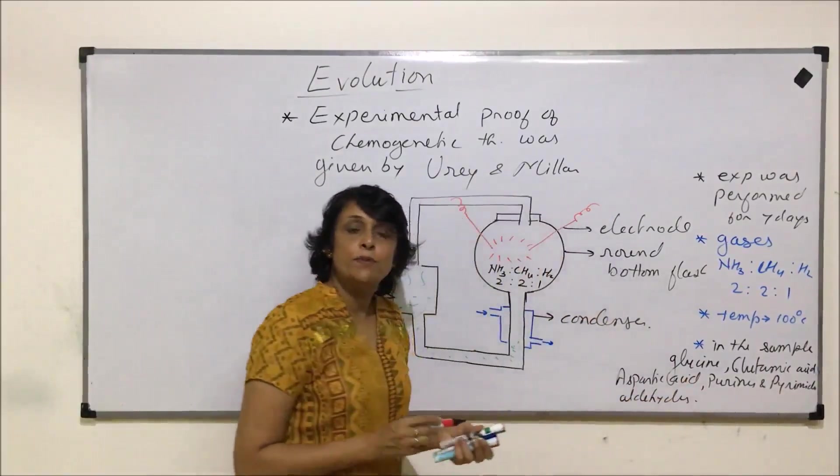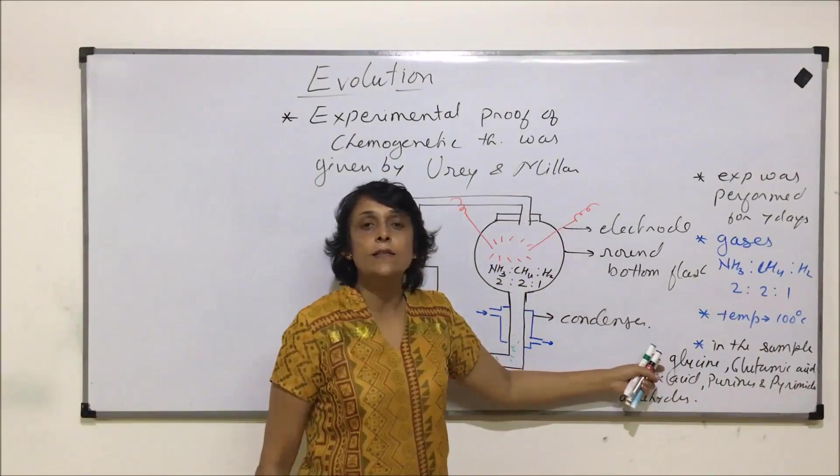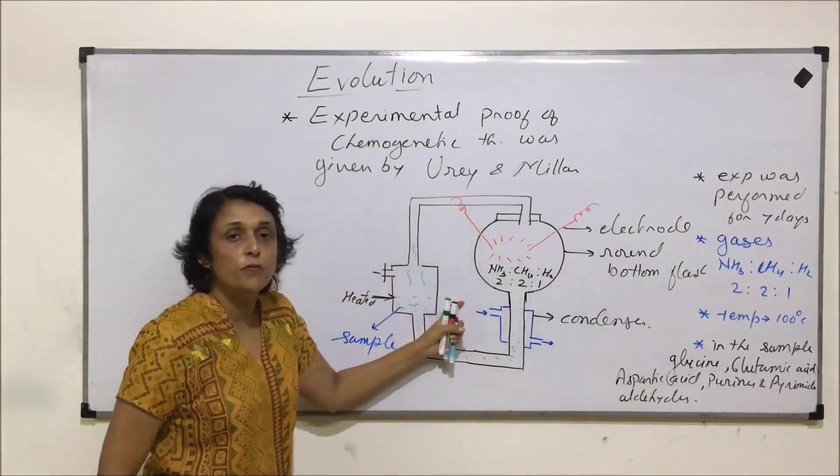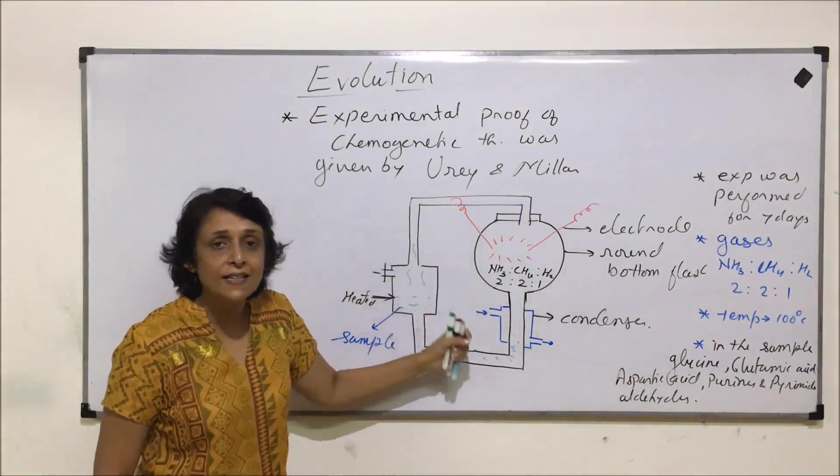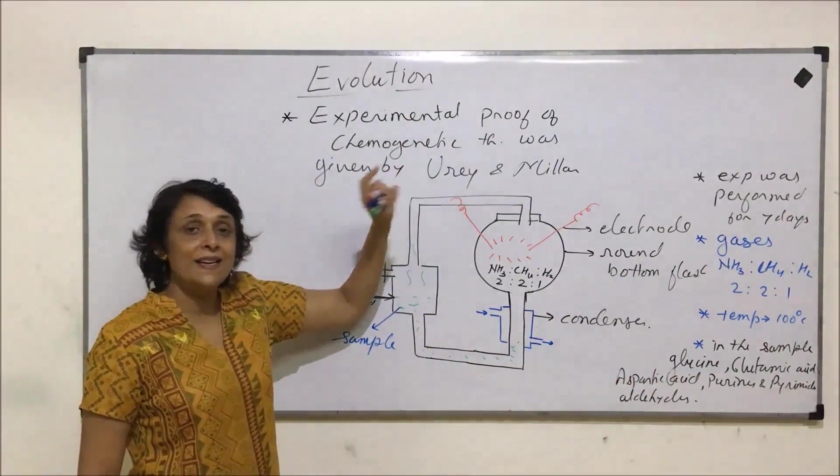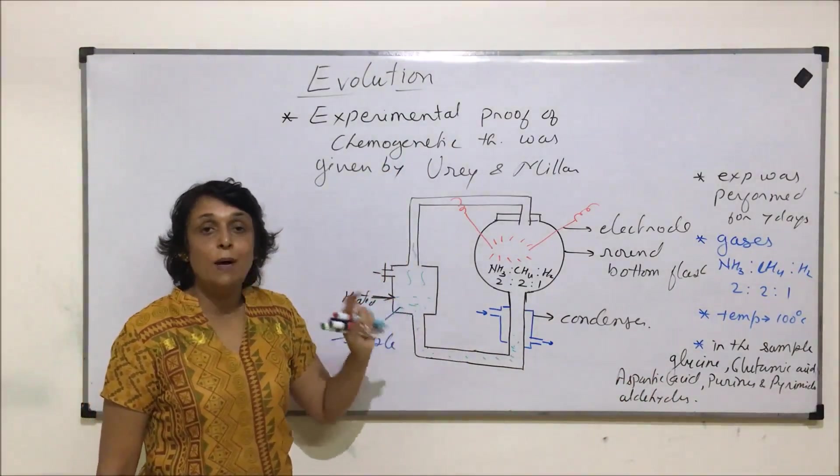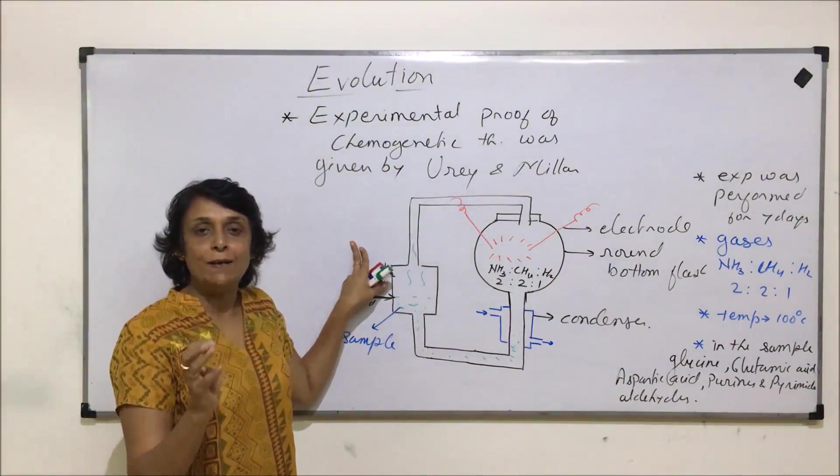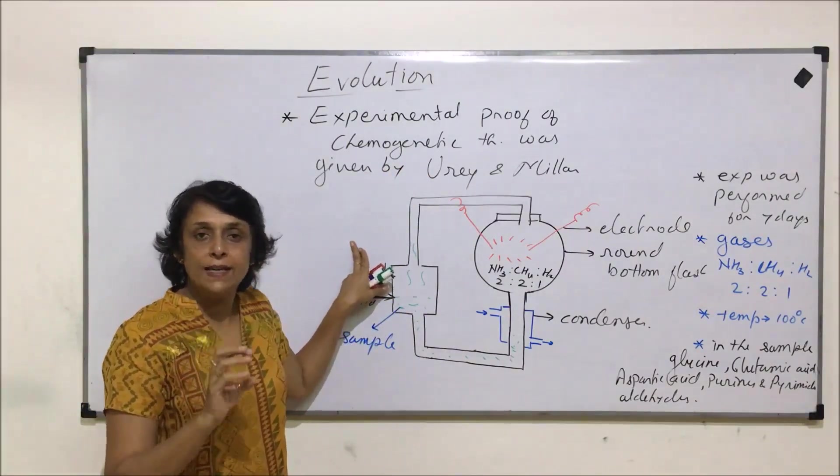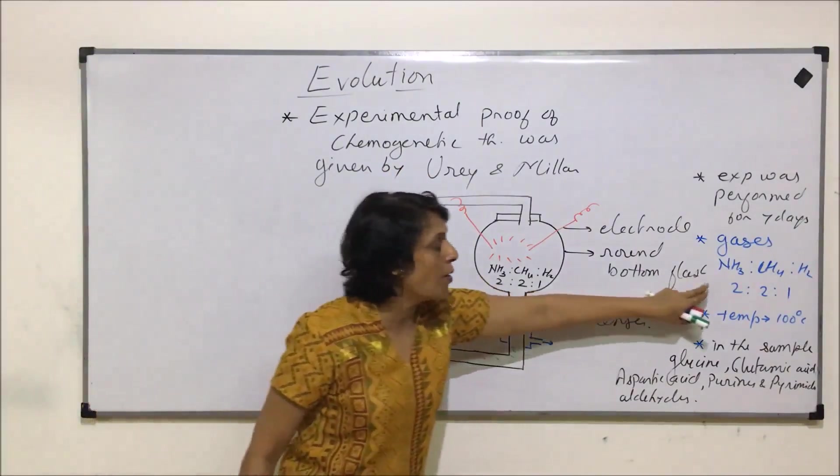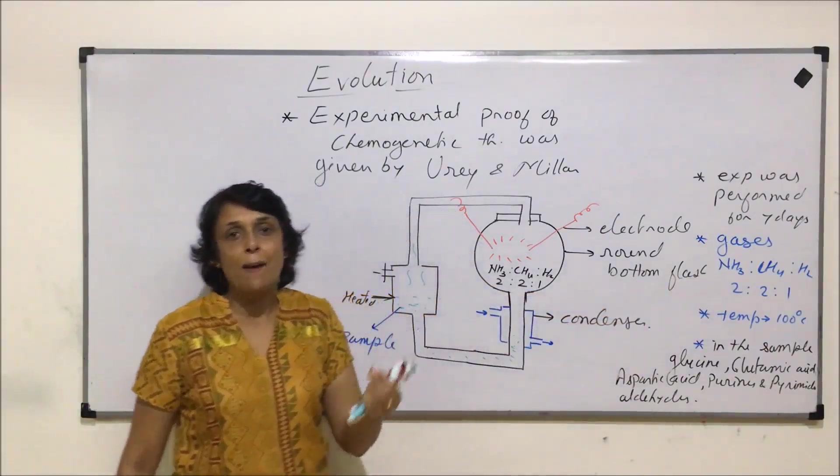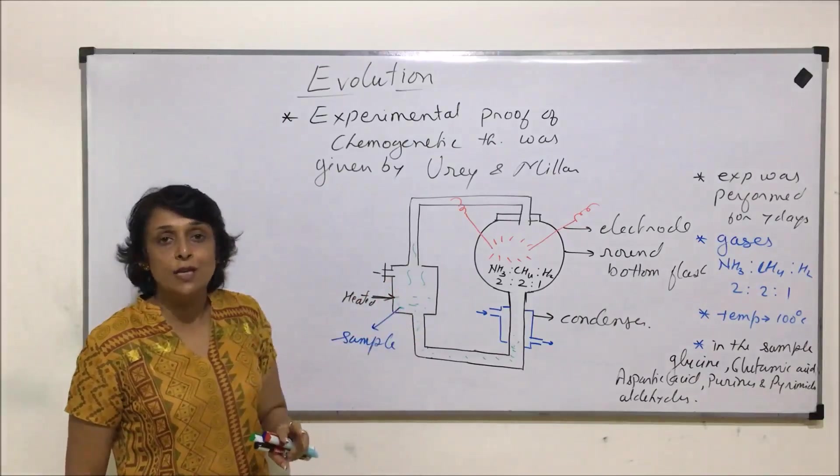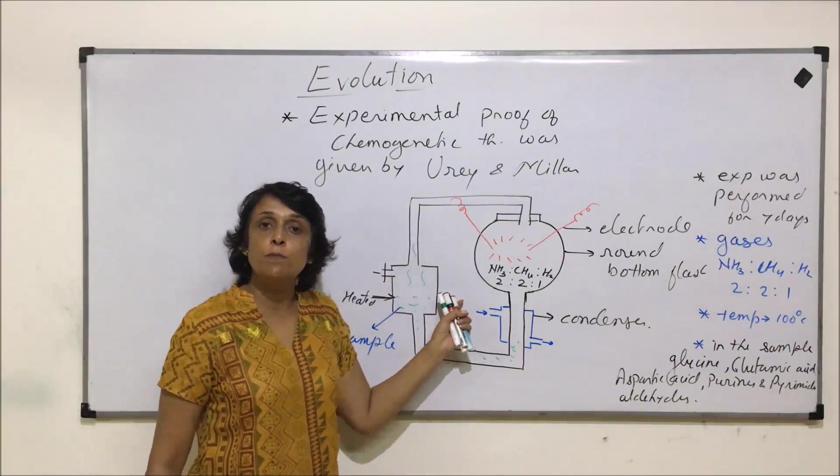These substances are found in living organisms which exist today also. What experimental proof did this experiment give us? It gave us that what Operin and Helden told us about chemogeny—that when life originated, the conditions were high temperature, UV rays, lightning was present, the gases were predominantly these, and something must have happened resulting in the formation of chemical compounds.